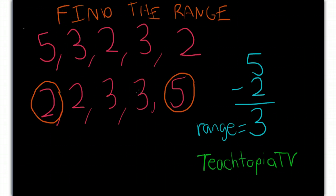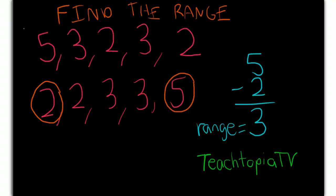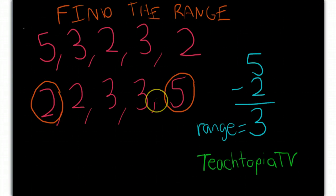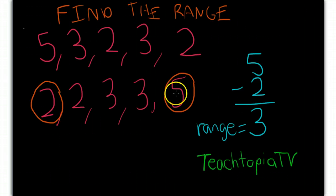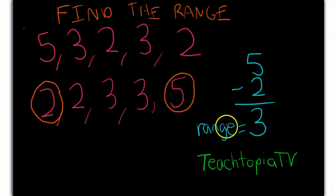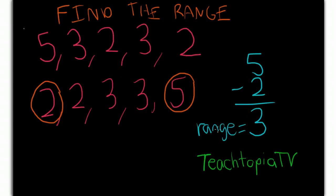But once we had the numbers in order from least to greatest, we simply went 2 through 5, 5 being the least value, 5 being the greatest value, 5 minus 2, the difference here is 3, and that is also our range of the set of numbers. Okay, that is a brief tutorial by TeachTopiaTV on how to find the range.